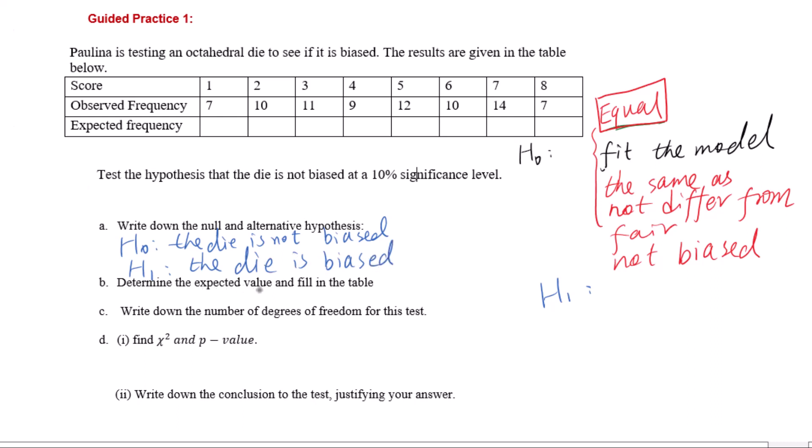Determine the expected value and fill in the table. Suppose the die is fair, then all eight numbers will be evenly distributed. First, add all the observed frequencies together, which equals 80. Then divide 80 by 8 to get 10. The expected frequency will be the same for all outcomes, all are 10.